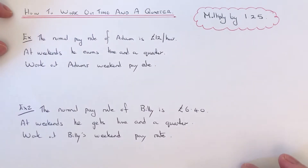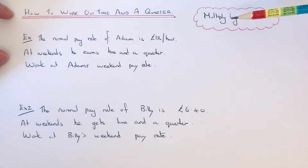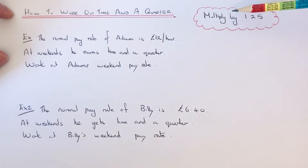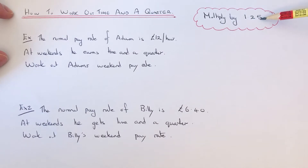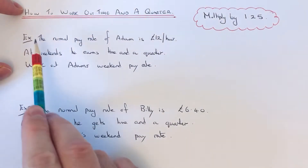Hi guys, today I'm going to show you how to work out time and a quarter. To do this, you just need to multiply the original pay rate by 1.25, because a quarter is 0.25.